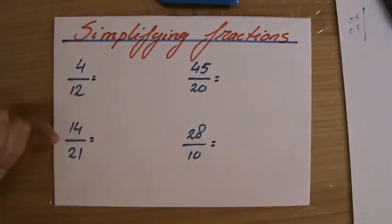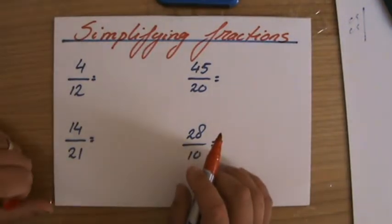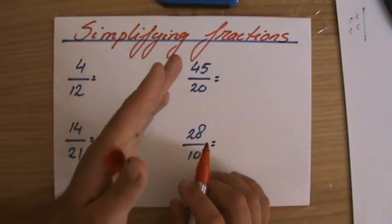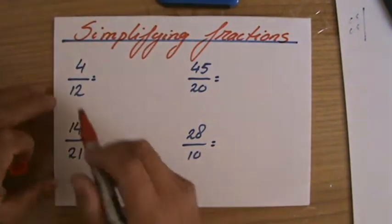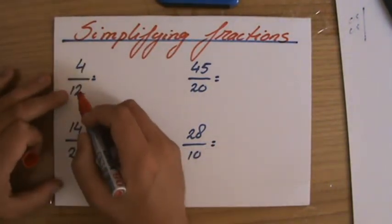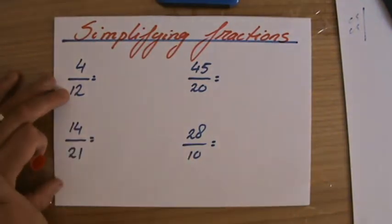Let's have a look. 4 over 12. Take out the highest common factor. Now if you don't see the highest common factor straightaway, you can do it in steps as well. That's fine. Because 4 and 12, they're both even, so I know I can get rid of a factor of 2.